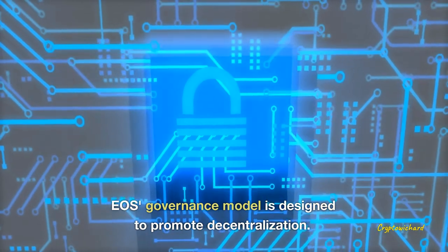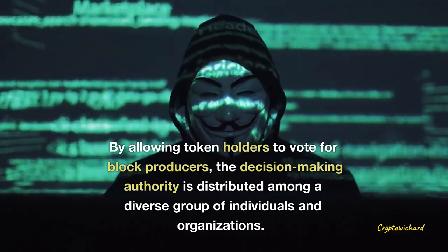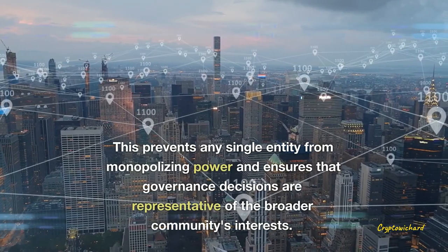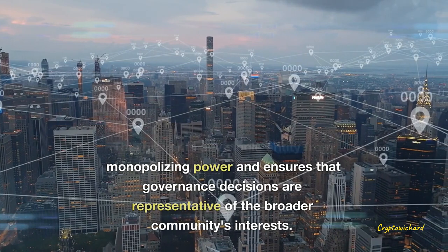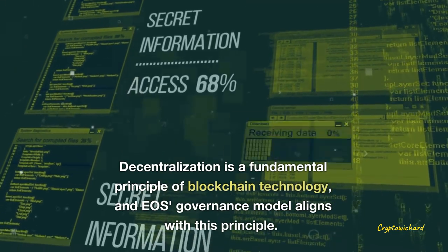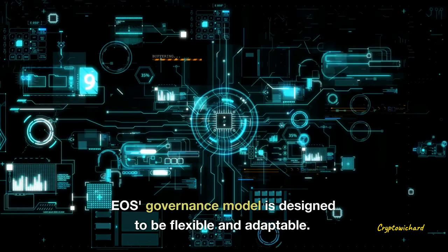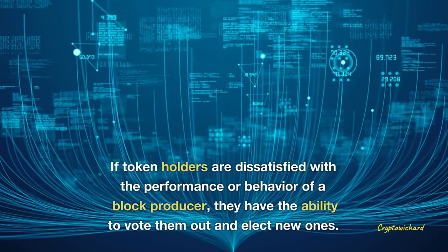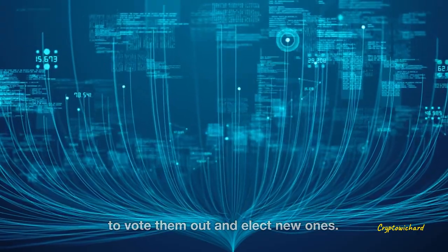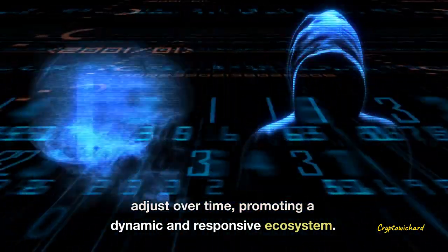EOS's governance model is designed to promote decentralization. By allowing token holders to vote for block producers, the decision-making authority is distributed among a diverse group of individuals and organizations, preventing any single entity from monopolizing power and ensuring that governance decisions are representative of the broader community's interests. Decentralization is a fundamental principle of blockchain technology, and EOS's governance model aligns with this principle. The model is also designed to be flexible and adaptable: if token holders are dissatisfied with a block producer, they can vote them out and elect new ones, promoting a dynamic and responsive ecosystem.